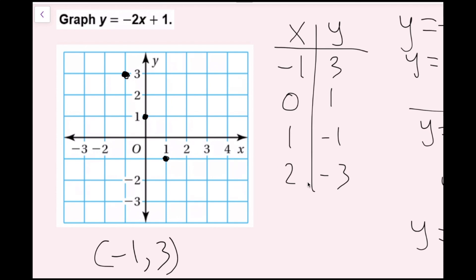The last point is 2 comma negative 3 — right 2 and down 3. I've now successfully plotted all my points. The last thing is to draw a line through them using a straight edge or ruler, lining it up with the points. I drew my line across the entire graph, and I put arrows at each end to show the line is infinitely long — without arrows it would be assumed to be a line segment. We've successfully graphed y equals negative 2x plus 1.